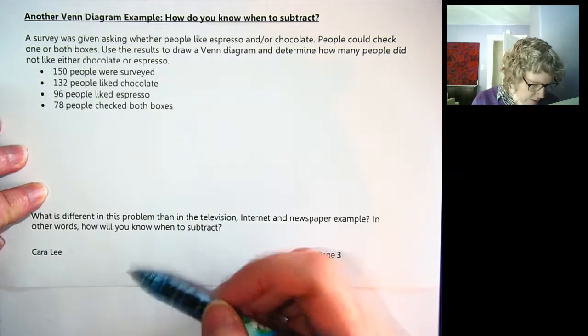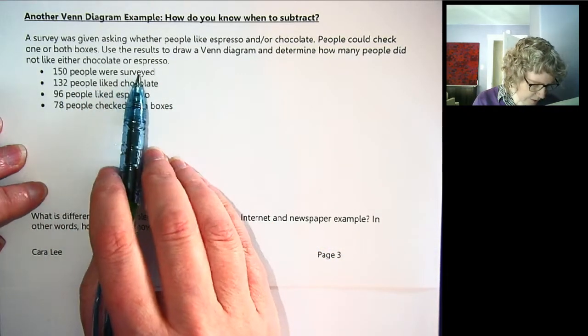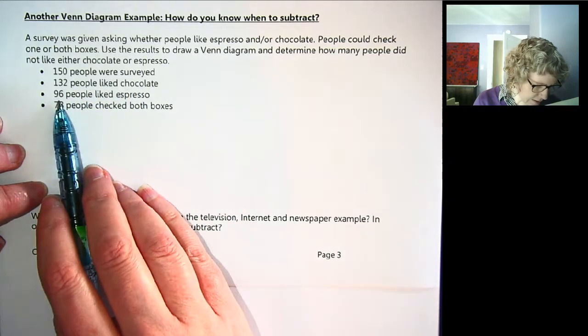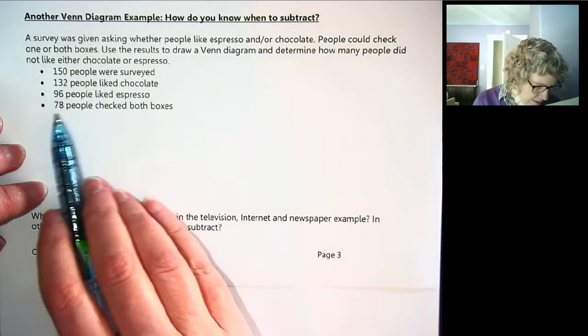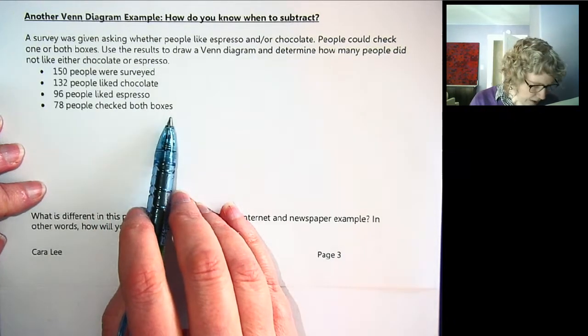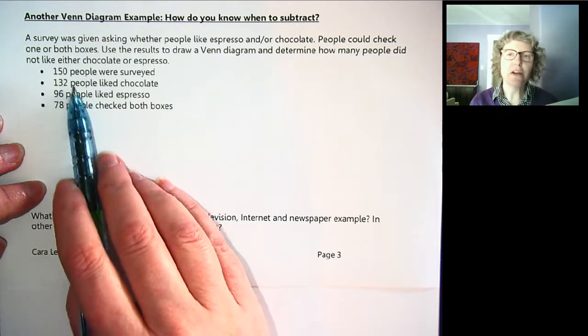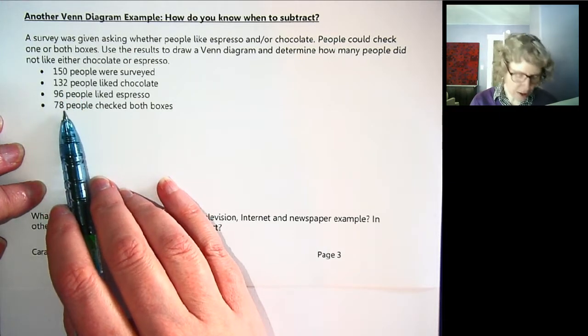Okay, so we know 150 people were surveyed, 132 people liked chocolate, 96 people liked espresso, and 78 people checked both boxes. One thing you might notice right away is these numbers add up to more than 150, don't they? So how is that possible?